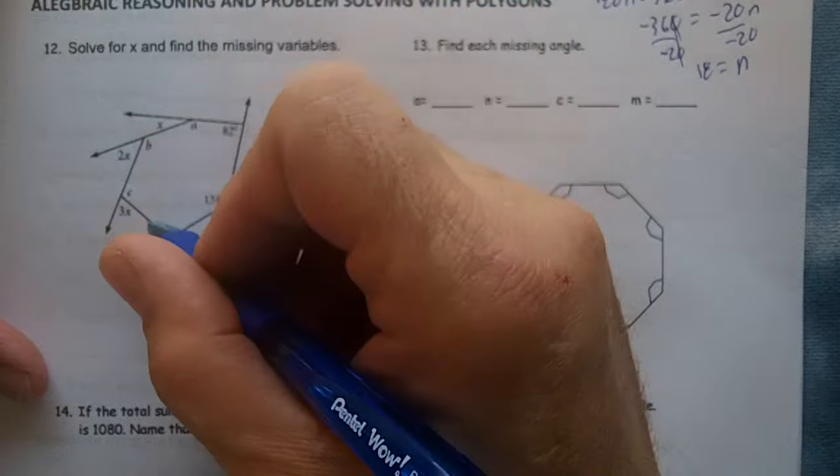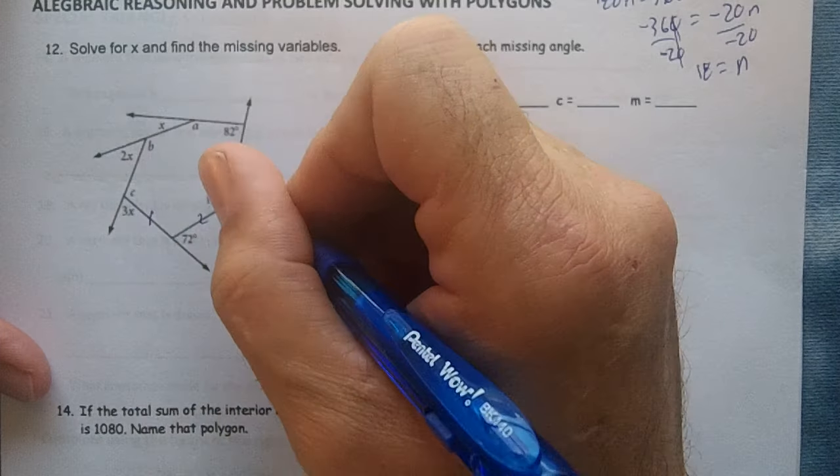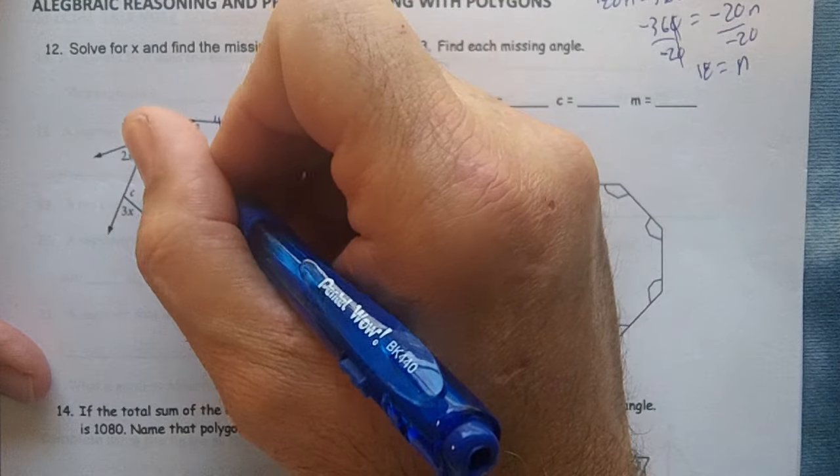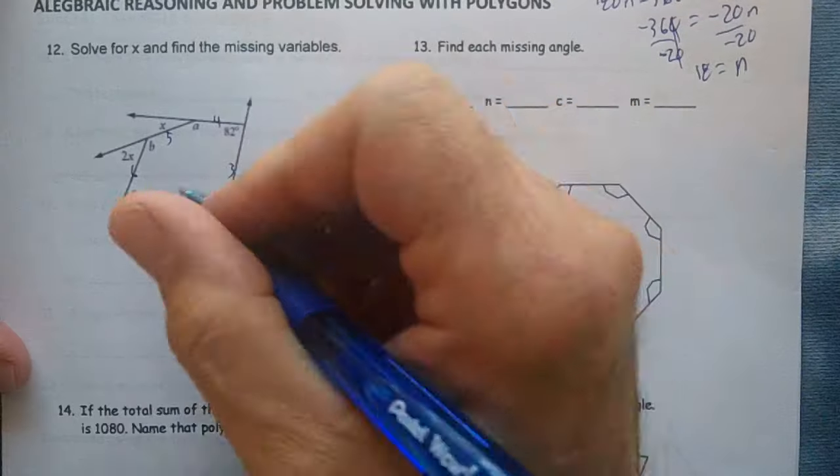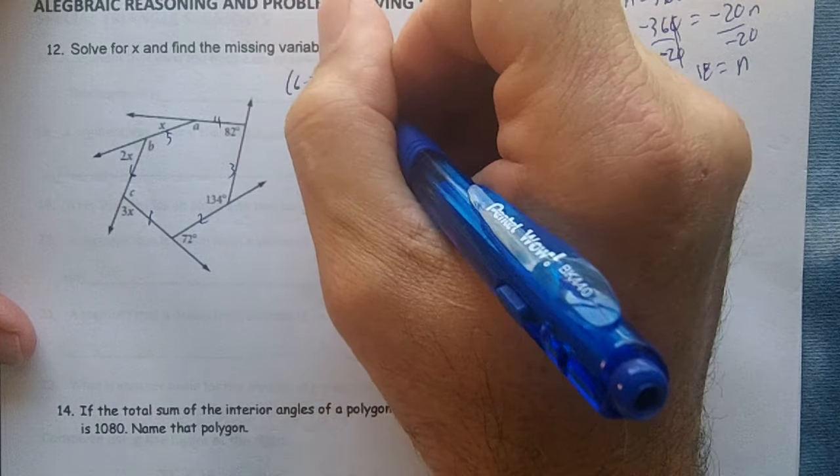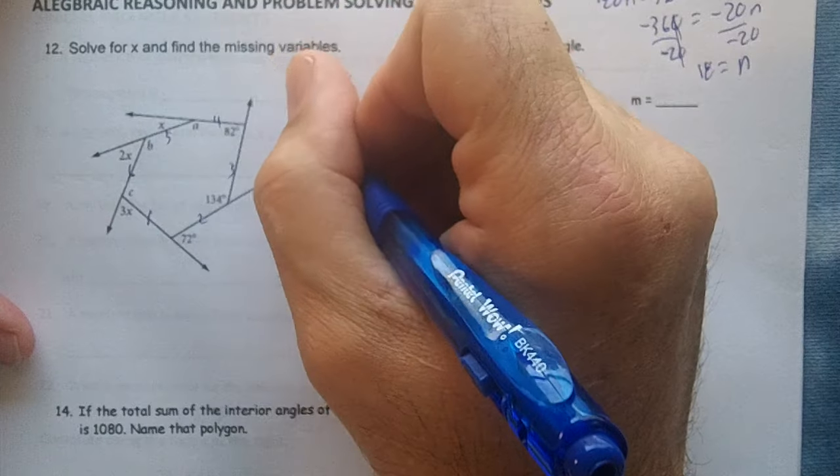Solve for x and find the missing variables. On this edge right here I have 1, 2, 3, 4, 5, 6 edges, right? So 6 minus 2 times 180 is going to be 720.